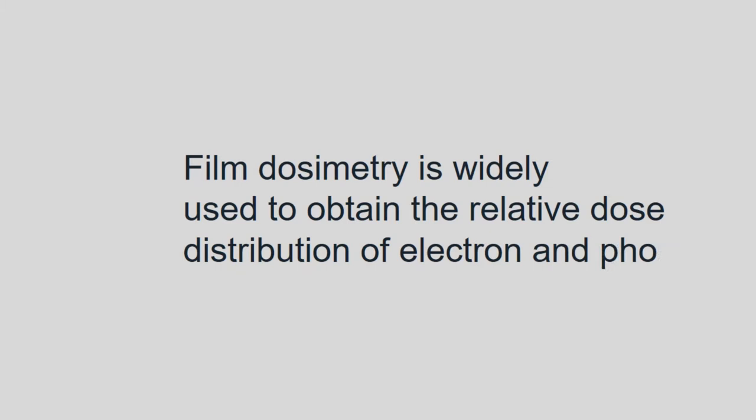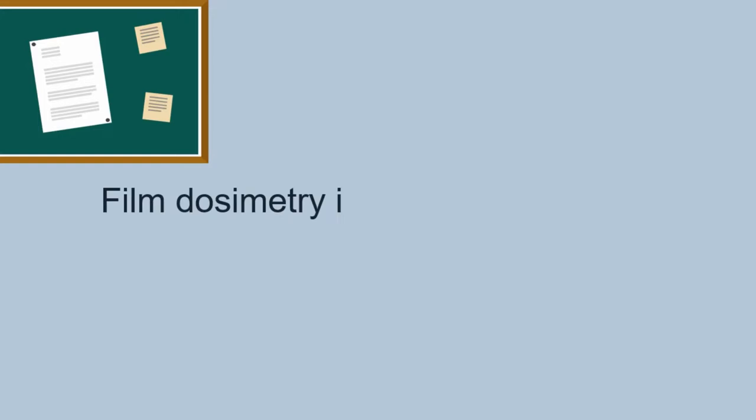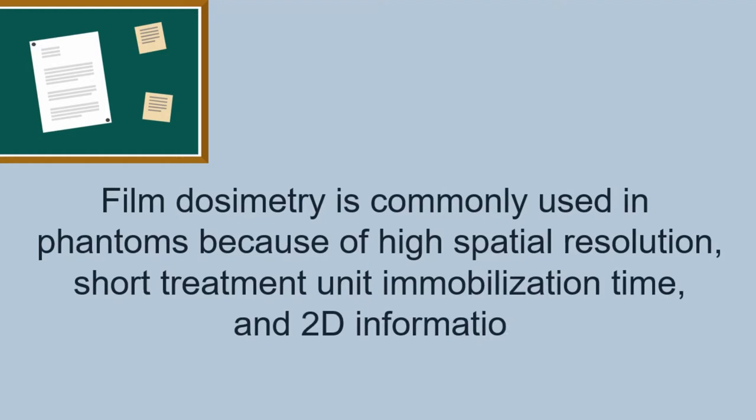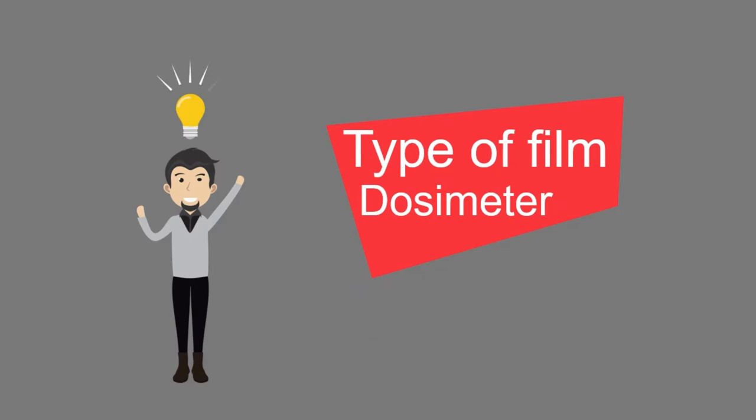Film dosimetry is widely used to obtain the relative dose distribution of electron and photon beams in water, plastic, and inhomogeneous phantoms. It is commonly used in phantoms because of high spatial resolution, short treatment time, and 2D information.